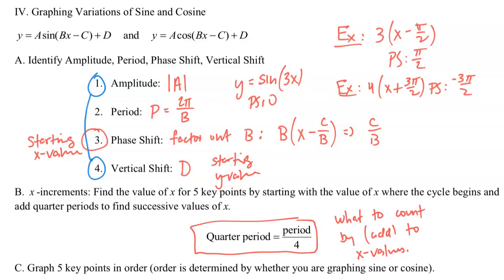Once you get your phase shift, that's your first x value, and then you get four more by adding the x increment, which is period divided by 4. Then graph the five key points in order. The order is determined by whether you are graphing sine or cosine: sine is 0, max, 0, min, 0; cosine is max, 0, min, 0, max.